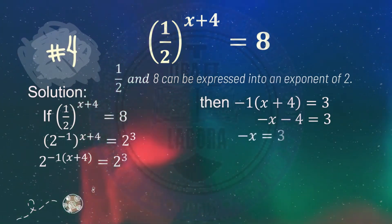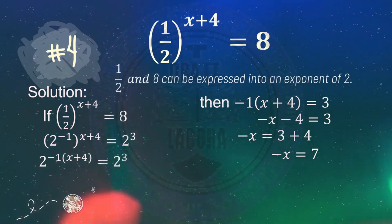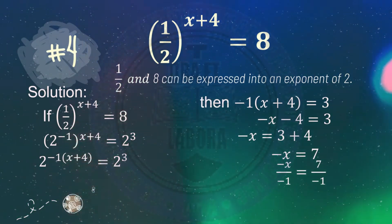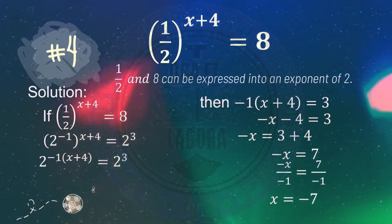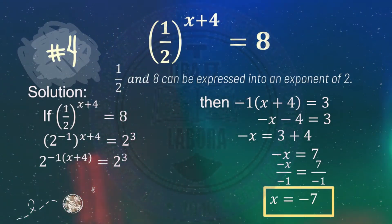Transposing negative 4 to the other side, we get negative x equals 3 plus 4, which is 7. Since we are solving for x, not negative x, we divide both sides by negative 1 to cancel it out. Therefore x equals negative 7, since 7 divided by negative 1 is negative 7.